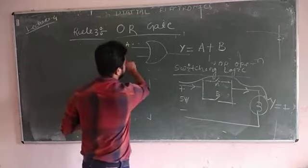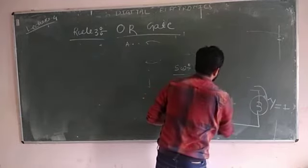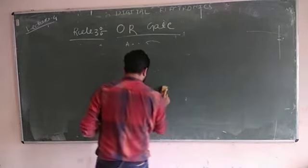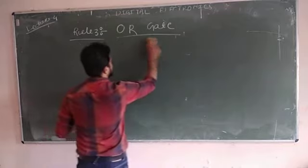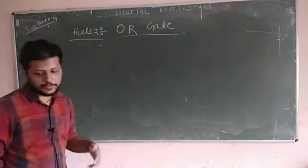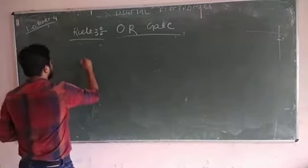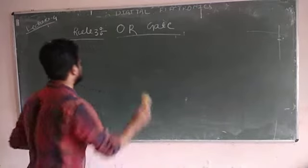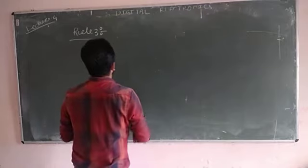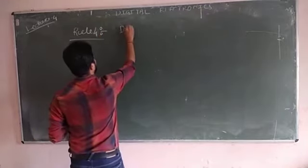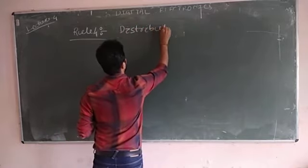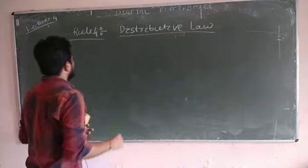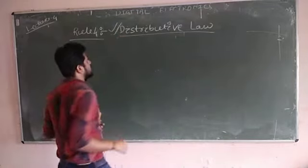Now rule number 4 — this is also very very important. While studying all these rules we can analyze and minimize the number of gates. Otherwise the cost and complexity of the circuit will increase. Rule number 4 is the distributive law, which you have all studied in mathematics. This law is very very important with respect to Boolean algebra.